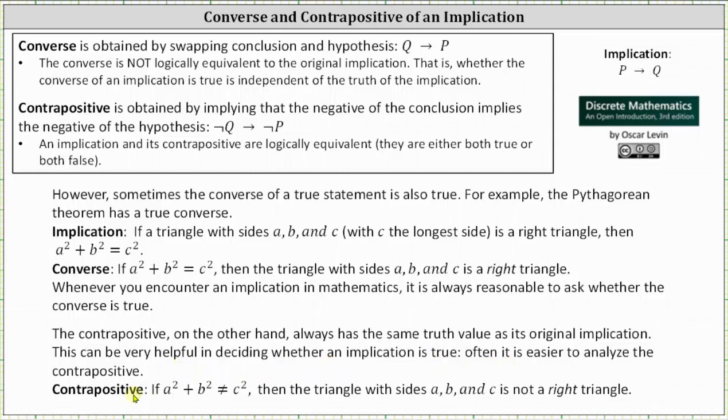The contrapositive of the original implication involving the Pythagorean theorem is if a squared plus b squared doesn't equal c squared then the triangle with sides a, b, and c is not a right triangle. And because the original implication is true we know this contrapositive is also true.